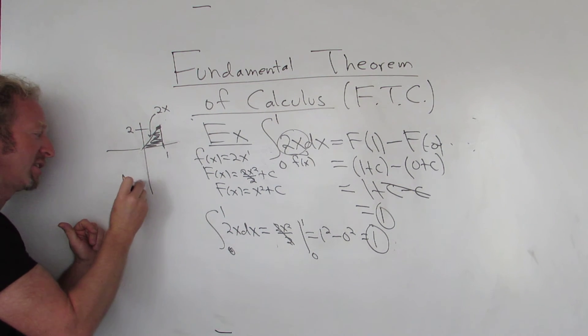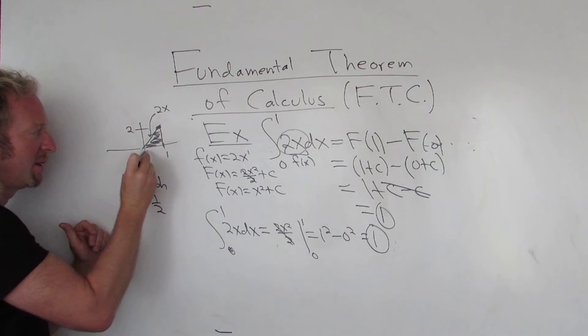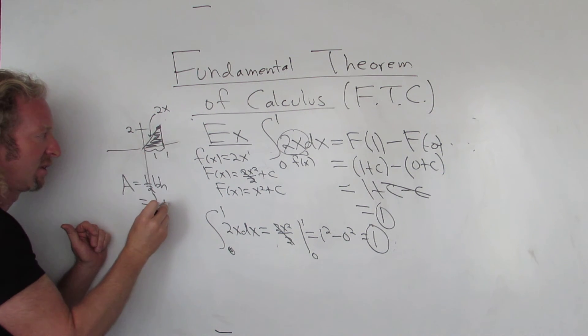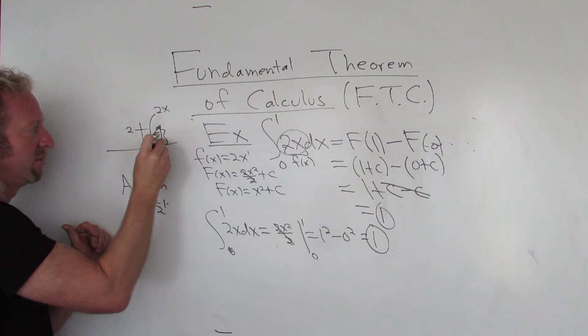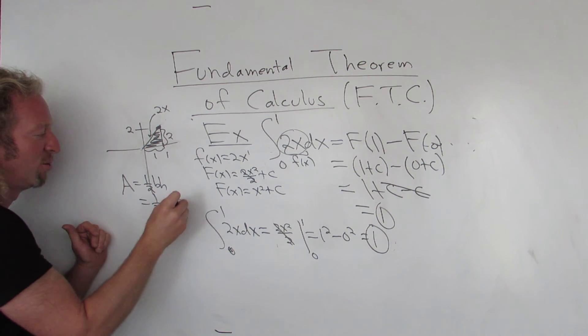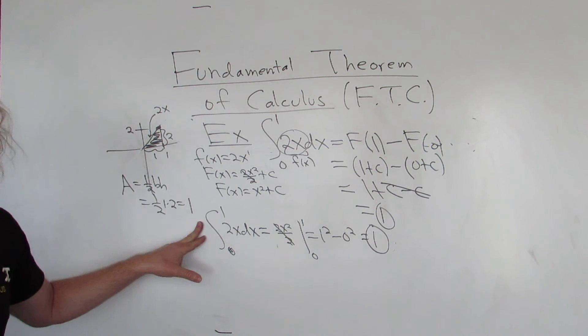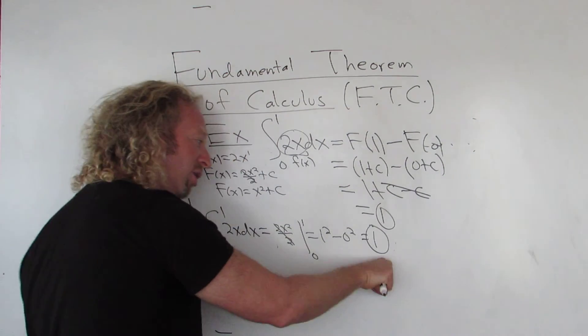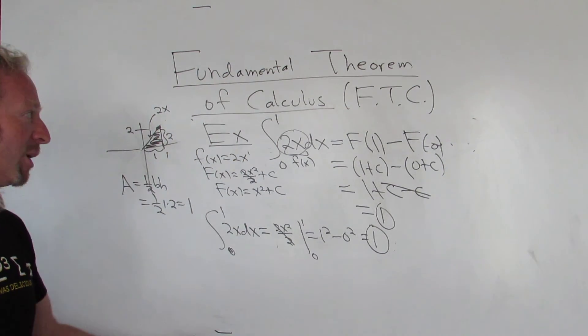Remember the area of a triangle, just for fun, it takes a second. One half base height. Why not? The base here is 1. The height here is 2. Boom! We get 1. So via geometry, we get 1. And via calculus, we also get 1. So pretty cool.